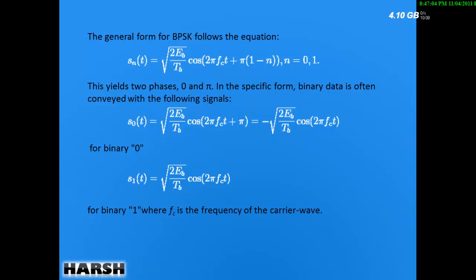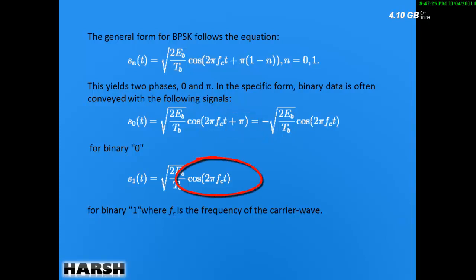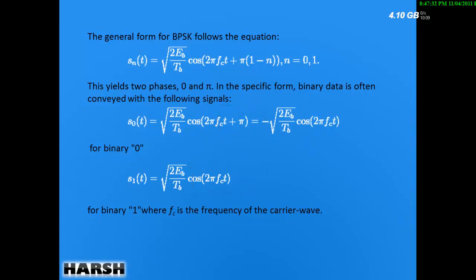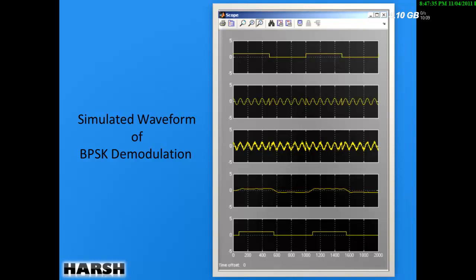In specific form, we substitute the values of n. For n=0, we get phase = π (180 degrees), and for n=1 the phase term is 0. So there are two phases: 0 and π, with a phase difference of 180 degrees.